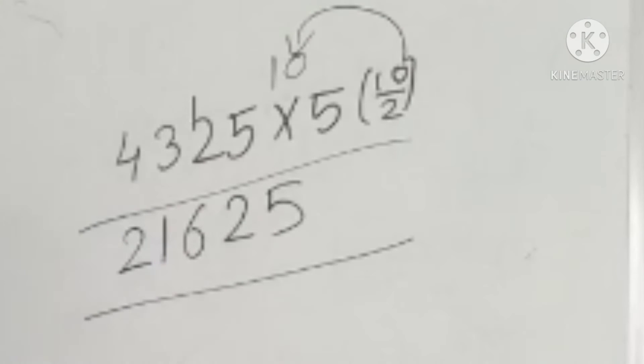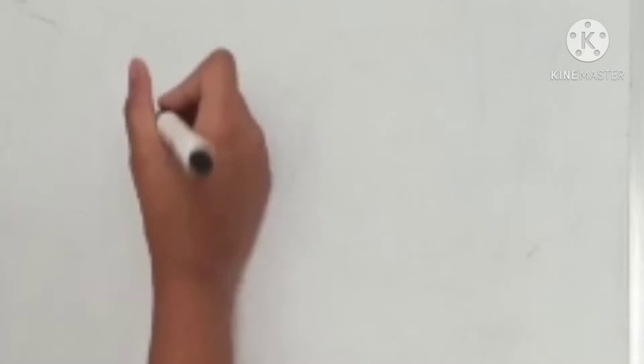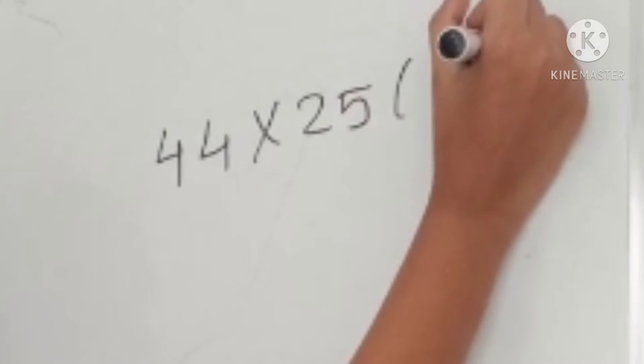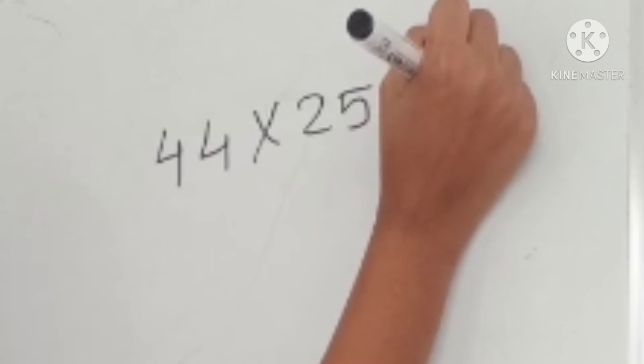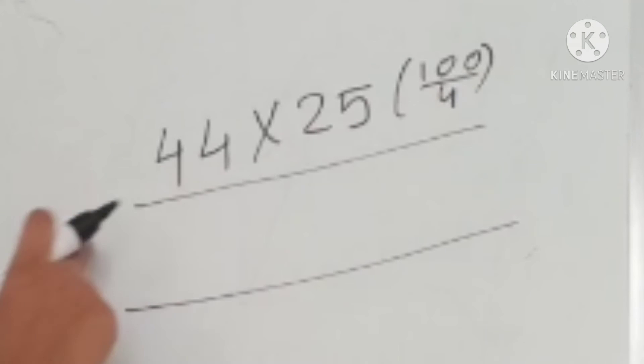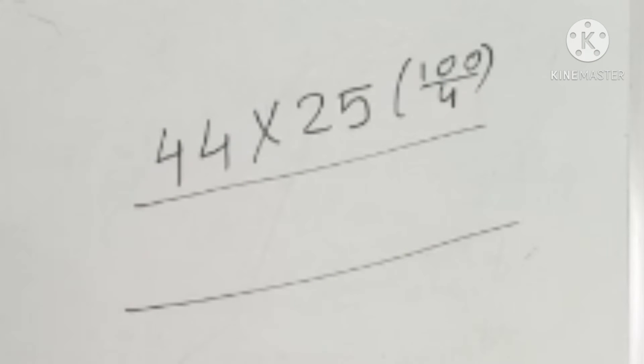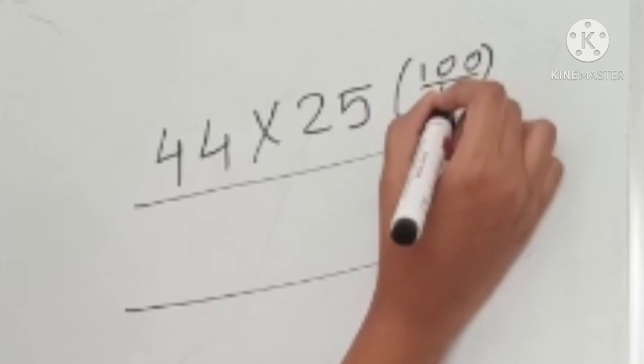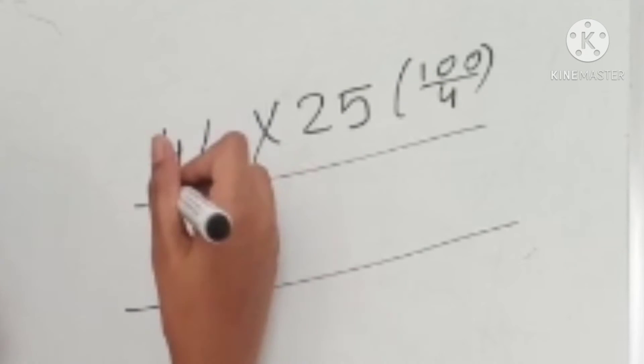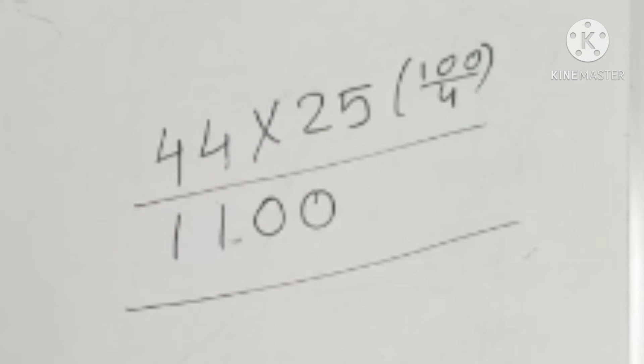So guys, isn't it easy? Now let's move on to 25. Let's take 44 multiplied with 25, which is nothing but 100 divided with 4. Now let's start solving. For this, you'll see when the digit or the number comes in 4's table, similar to 5. So 4 ones are 4, 4 ones are 4. And then you'll just add 2 zeros, and that's your answer. It's that simple.